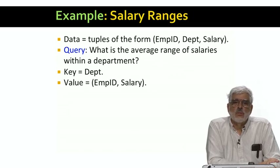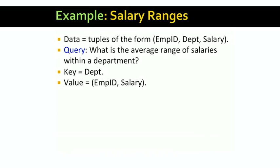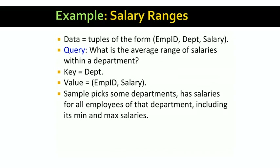The right way to sample is to treat only the department component of tuples as the key, and the other two components — the employee ID and salary — as part of the value. In general, both the key and value parts can consist of many components. If we sample this way, what we're doing is sampling a subset of the departments. But for each department in the sample, we get all its employee salary data and can get the true salary range for that department. When we compute the average of the ranges, we might be off a little because we're sampling ranges for some departments rather than all departments — but that error is just random noise introduced by the sampling process, not a bias in one direction or another.